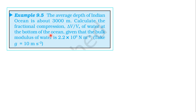From the topic Mechanical Properties of Solids, Example 9.5: The average depth of the Indian Ocean is about 3000 meters. Calculate the fractional compression delta V by V — that is, the fractional compression of water at the bottom of the ocean, given that the bulk modulus of water is 2.2 into 10 power 9 newton per meter square.